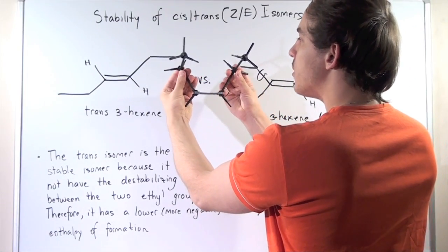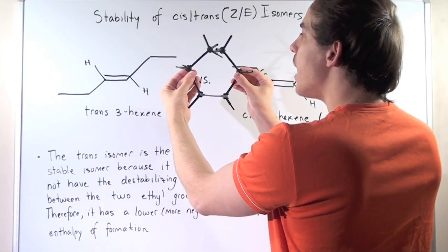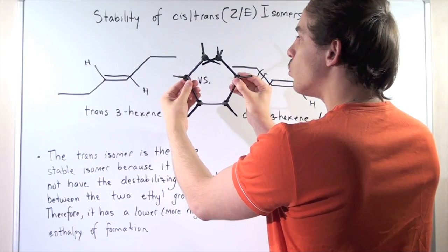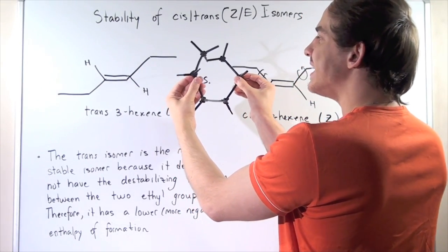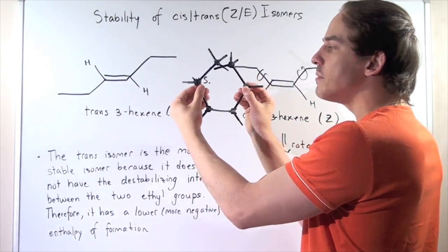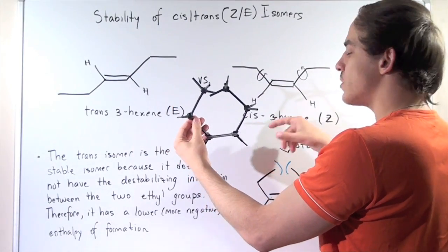When they rotate, they will bump. And this bumping will cause steric hindrance. This will interfere and destabilize this cis-3-hexene.